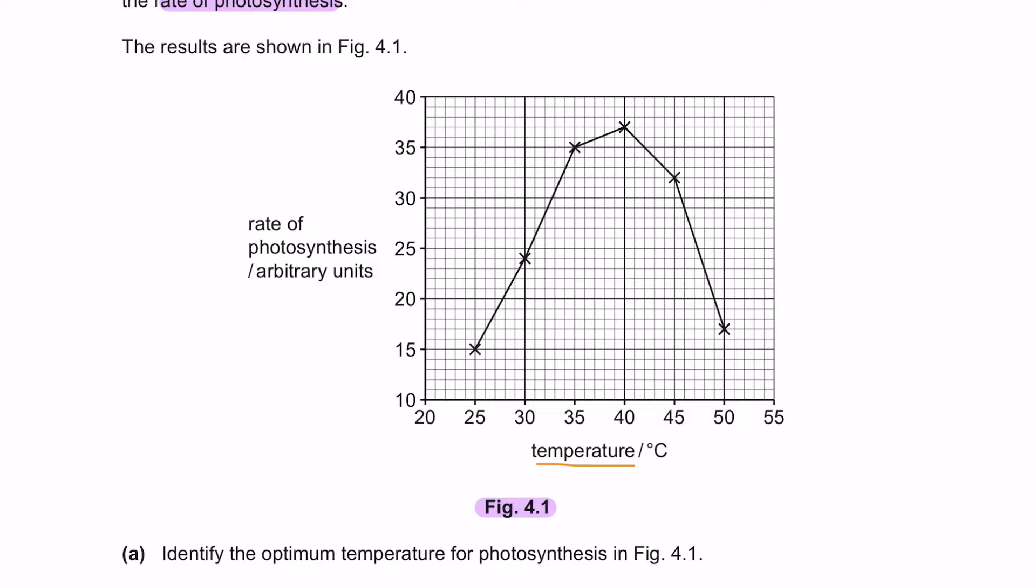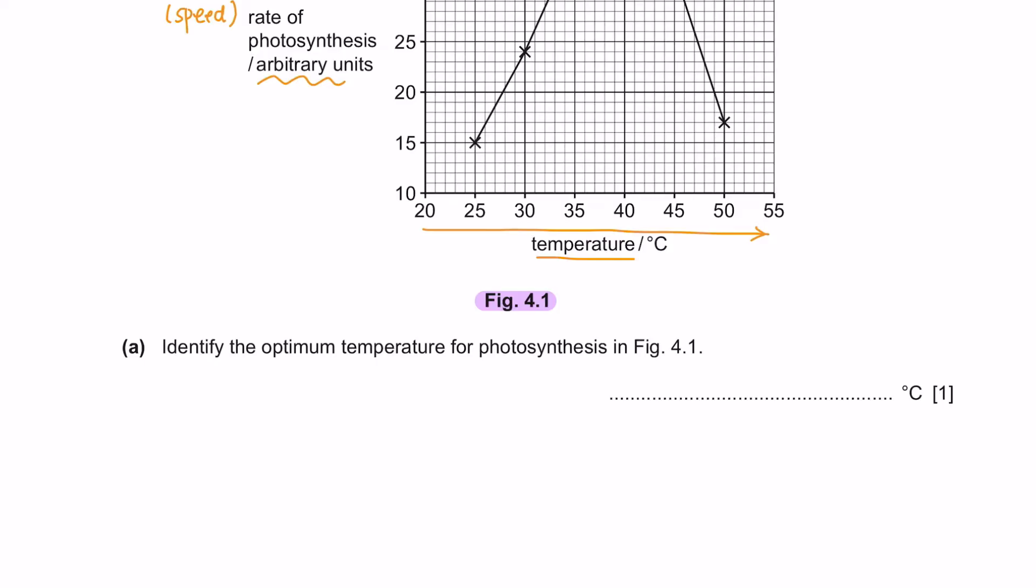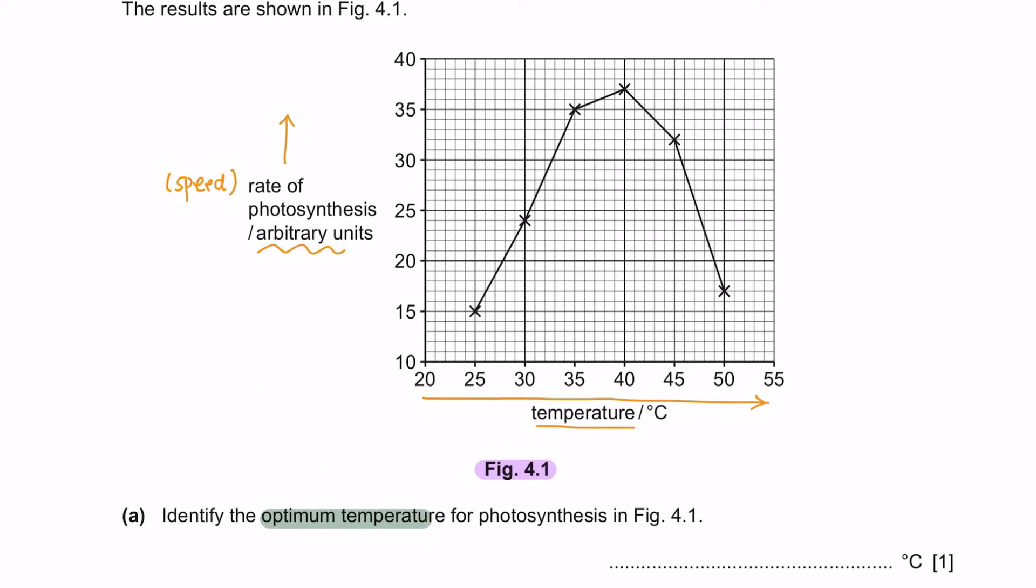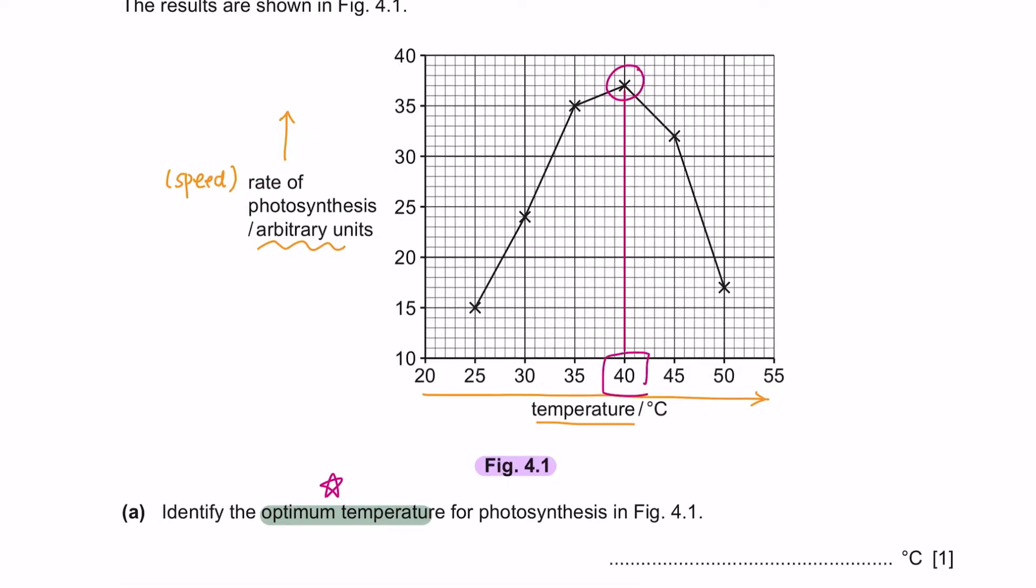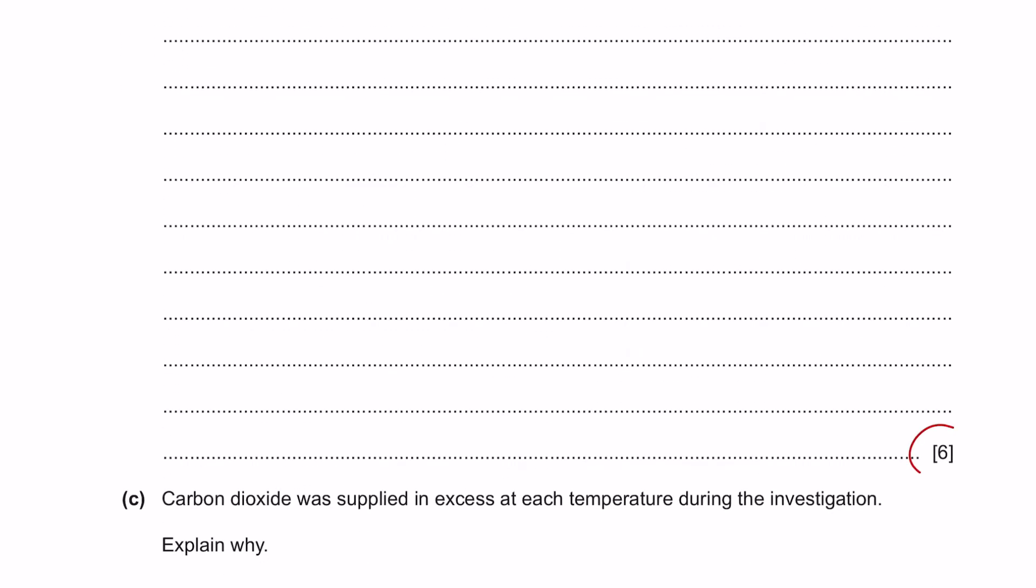On the x-axis, the temperature was measured between 20 to 55 degrees Celsius and the y-axis shows the rate of photosynthesis in arbitrary units. Question A. Identify the optimum temperature for photosynthesis in figure 4.1. The optimum temperature would be the best temperature at which the rate of photosynthesis is the highest, which is 40 degrees Celsius. Question B. Explain the results shown in figure 4.1 and you are given six marks for this question.